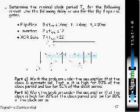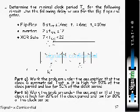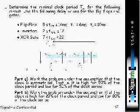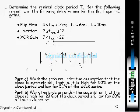Before proceeding we have to consider two parts. Part A: work the problem under the assumption that the clock is symmetrical, meaning the on-period and off-period are equal — that is, 50% duty cycle, high for 50% and low for 50% of the clock period. Part B: work the problem under the assumption that the clock is high for 20% and low for 80% of the clock period.